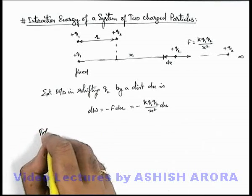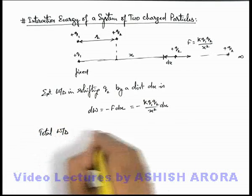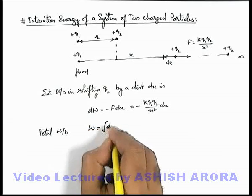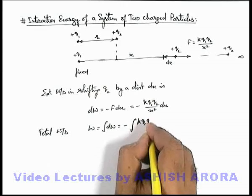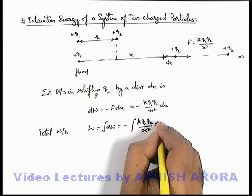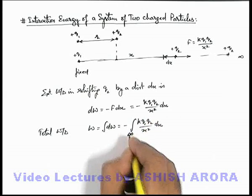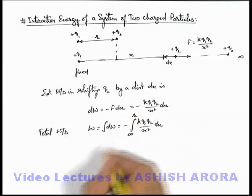Now in this situation, total work done can be calculated by integration of dW. That is minus integration of kq1q2 by x squared dx. Then I'll integrate the value of x from infinity to r.